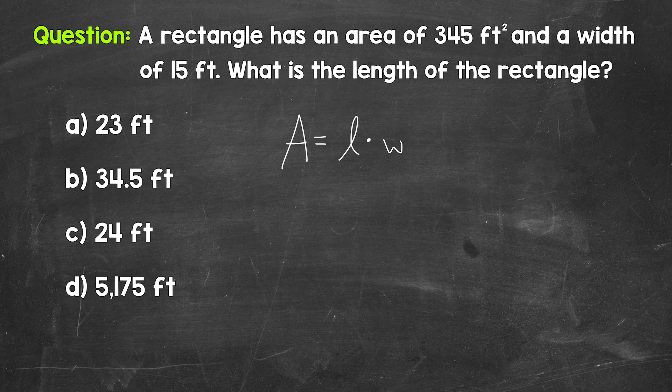Now what we need to do is use what we know, so what we are given, to figure out what we don't know. That's going to be the length of the rectangle. So we're going to plug in what we are given, the area and the width. So the area is 345 square feet. So let's plug in 345 for the area equals the length, which is our unknown, so keep our L there, times the width, which is 15 feet. So plug in 15 for the width.